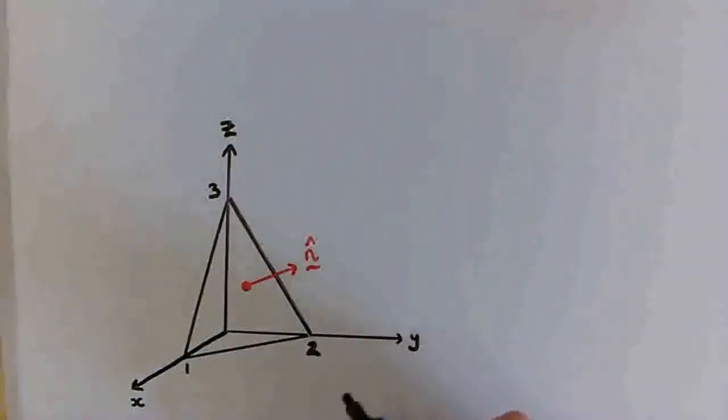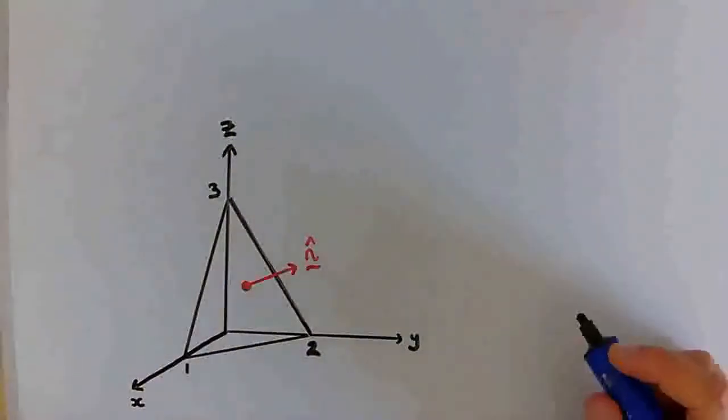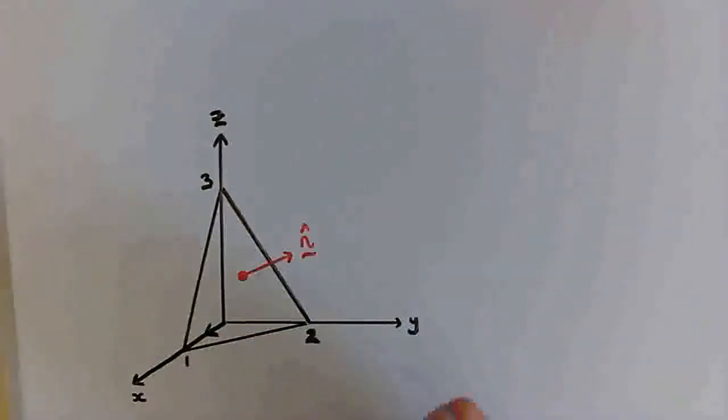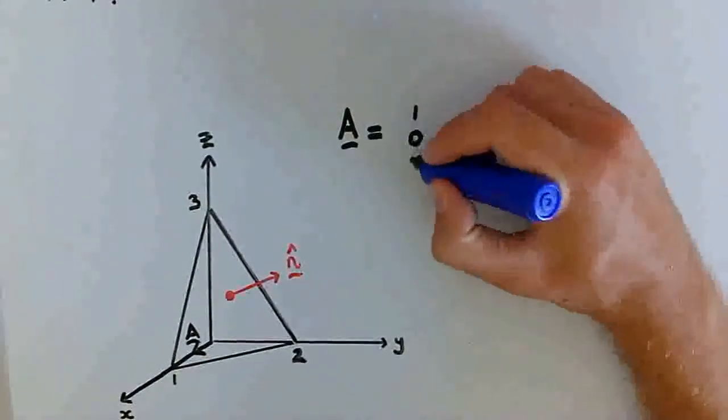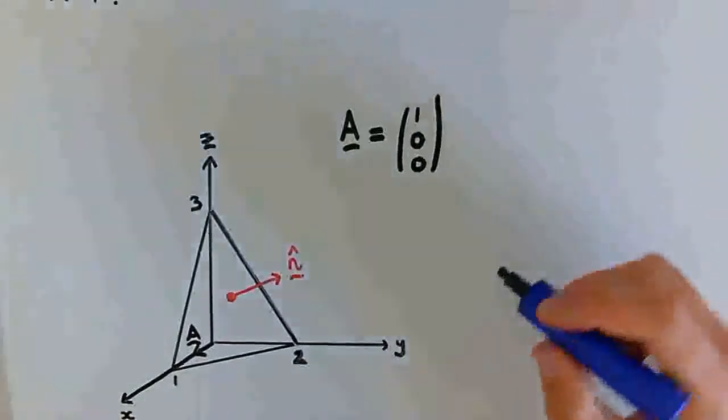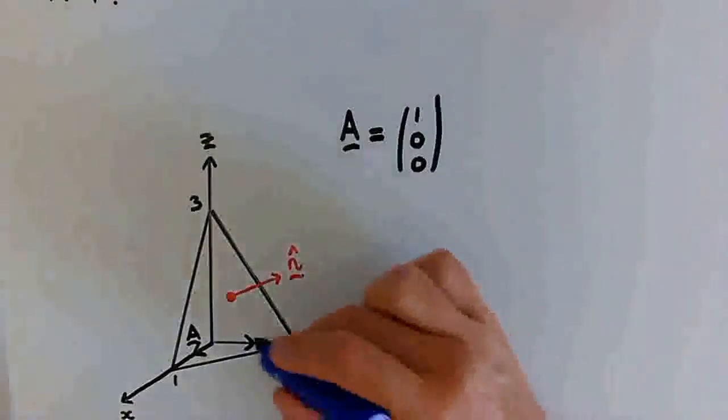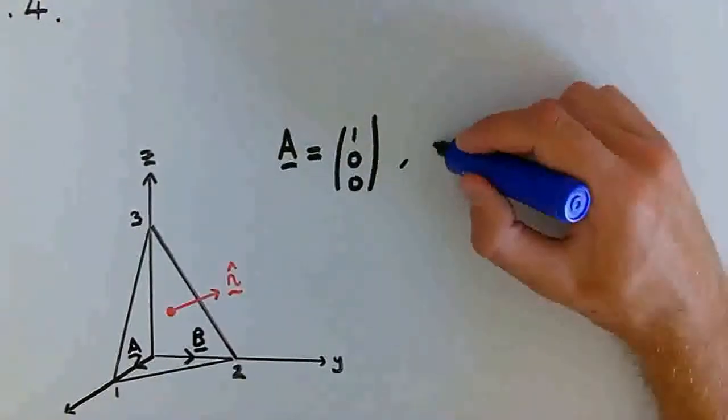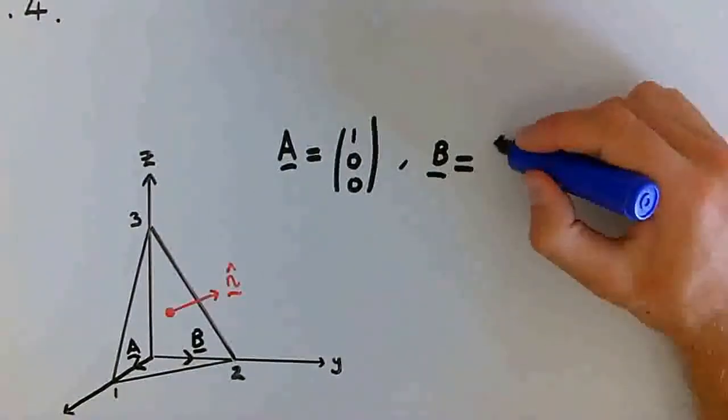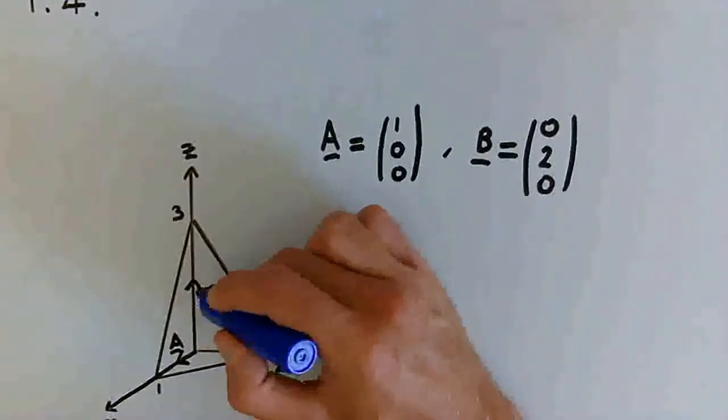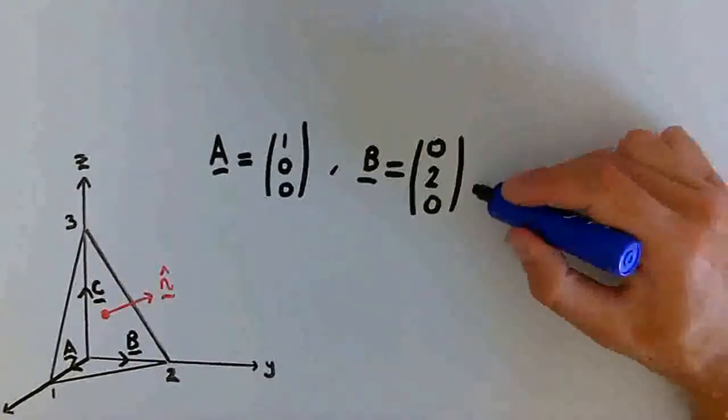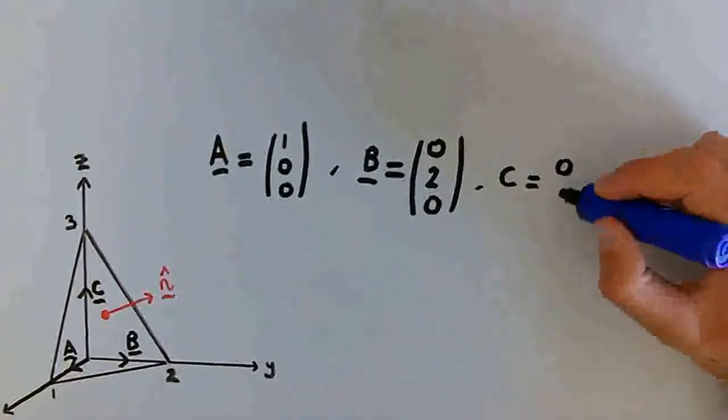So the first step would be to define vectors that travel from the origin to each of the three vertices. So let's start with A. We'll say it points from the origin to this vertex here, crossing the x-axis at 1. So that means we could write A in column vector form as (1, 0, 0). B pointing along the y-axis, so we can write B as (0, 2, 0). And C, pointing up the z-axis, so we can write C as (0, 0, 3).